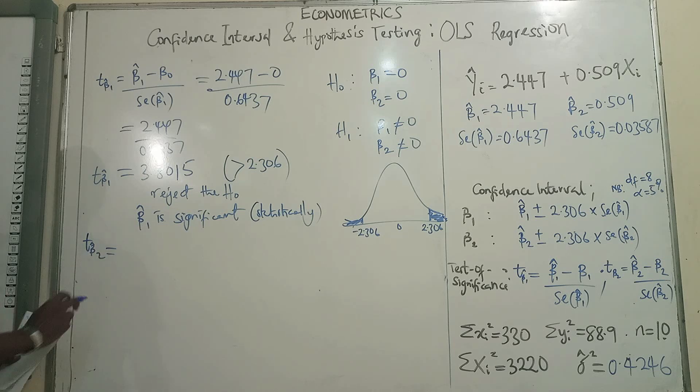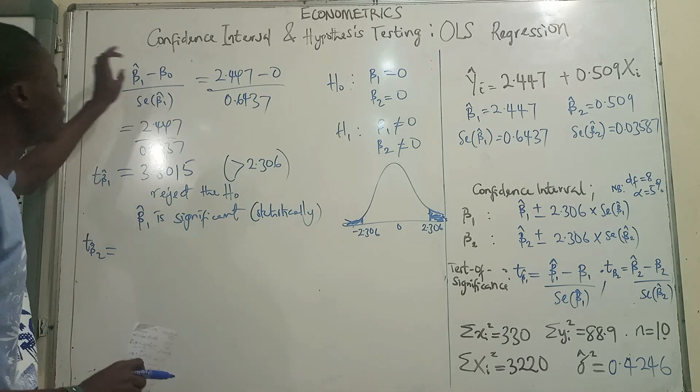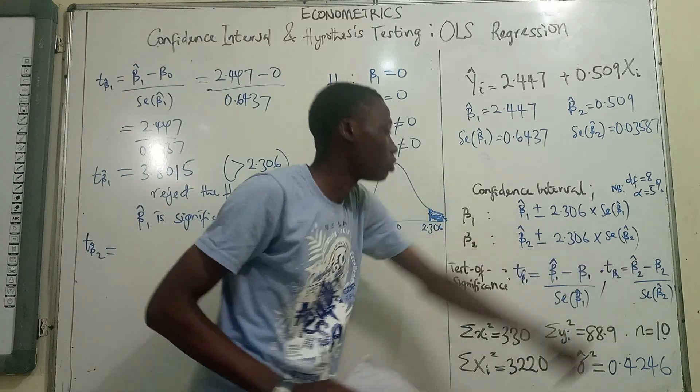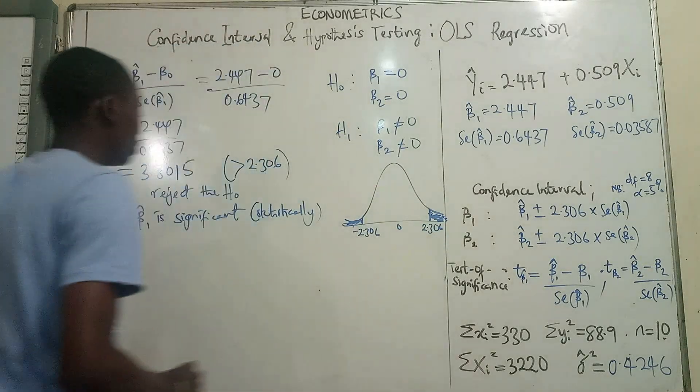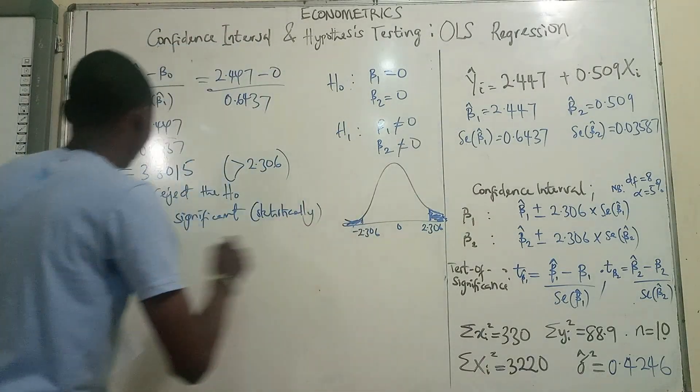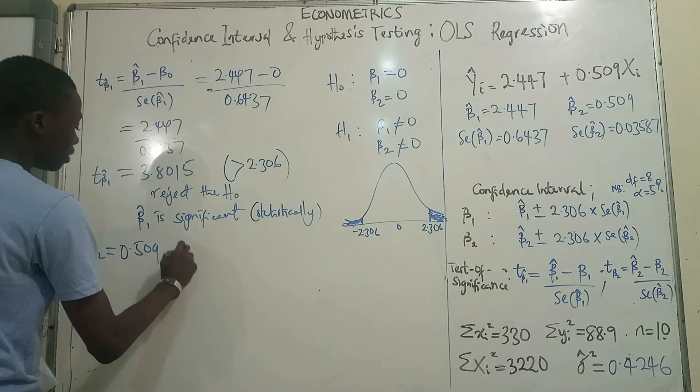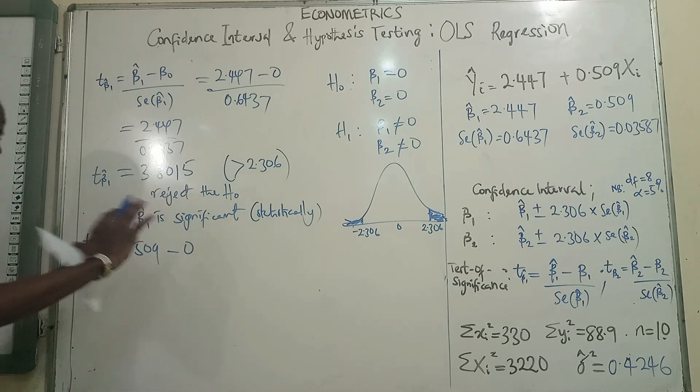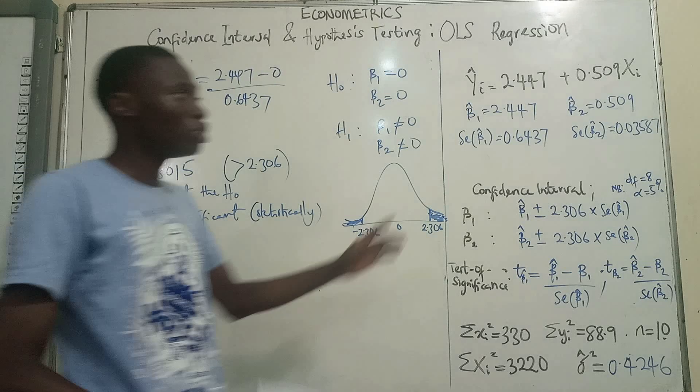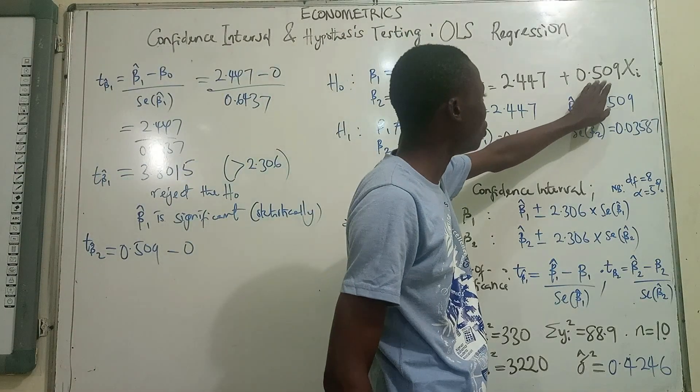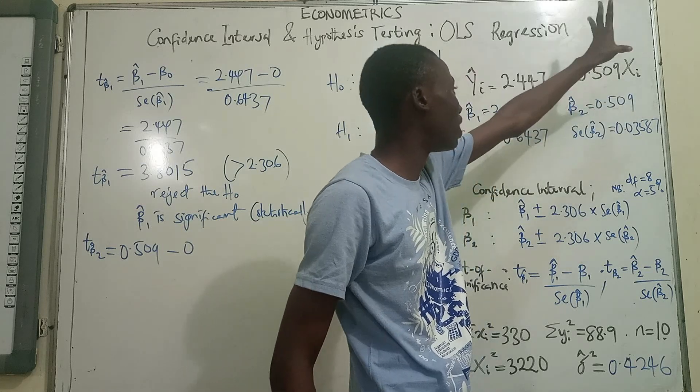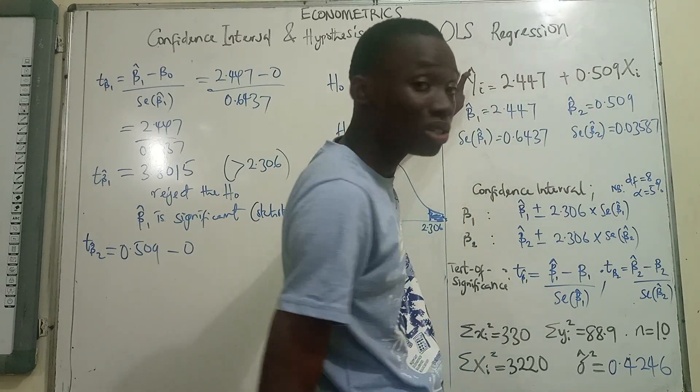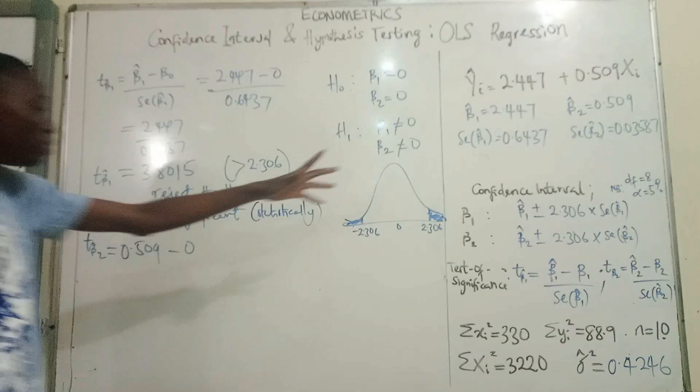Next for the test of significance for beta 2. Computing the T statistics. In the same way, beta 2 minus the null divided by the standard error of beta 2. So beta 2 here was 0.509 minus the null. The null is saying it's 0. There's no relationship. You know, if this beta 2 is actually 0, what it means is that whatever the X values we are getting is not influencing Y.